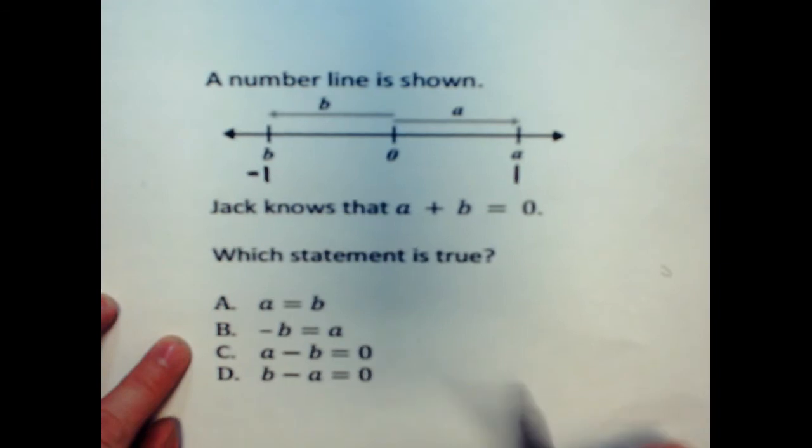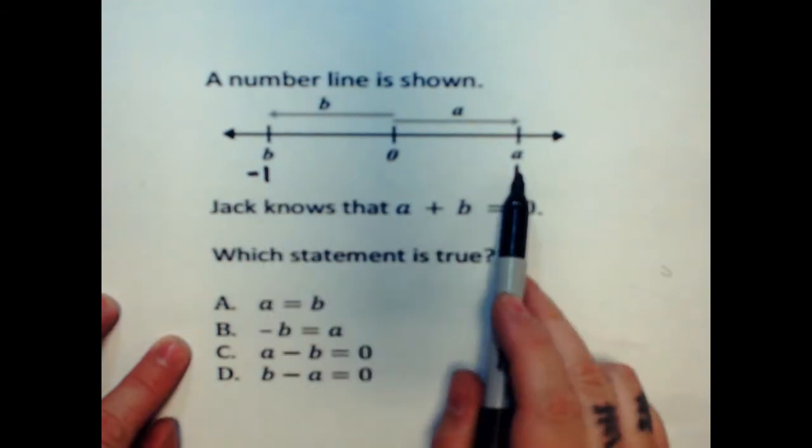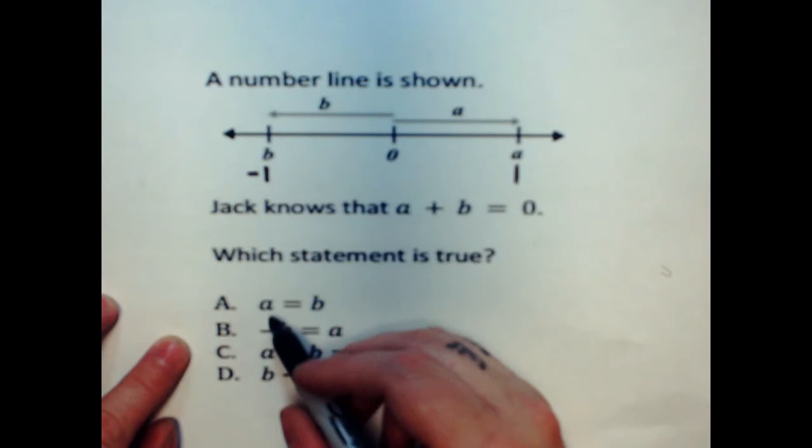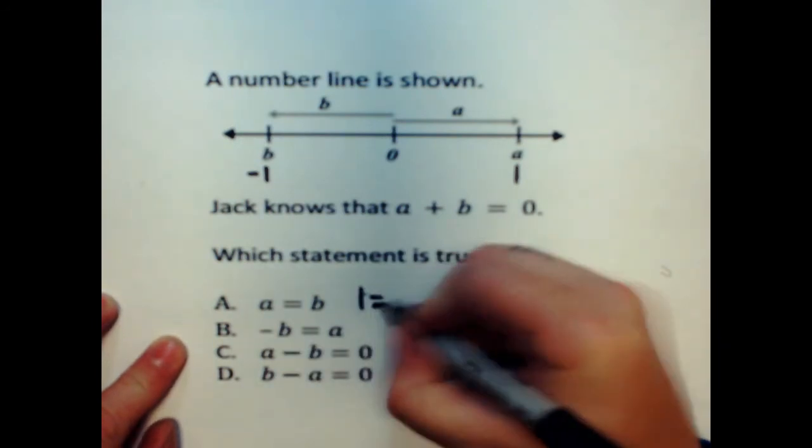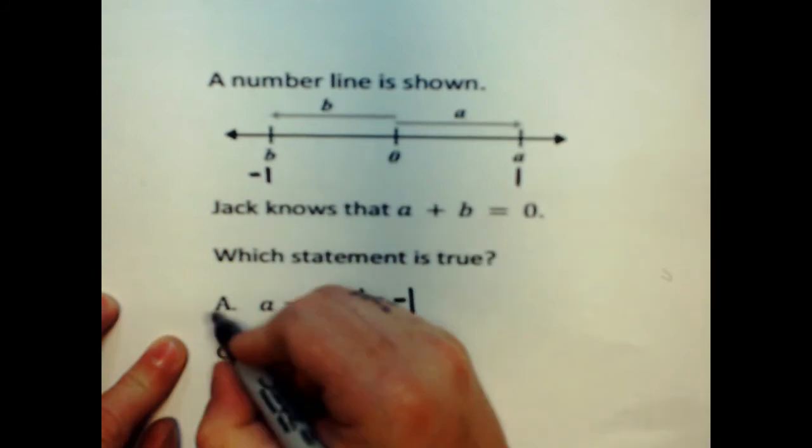Now I can look at my statements. And if I have said that A is one and B is negative one, I can say, does one equal negative one? No, that's definitely not true.